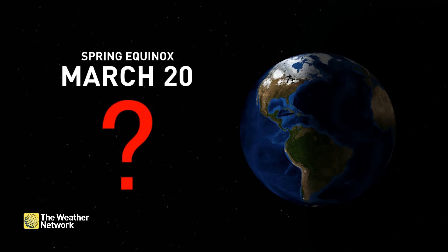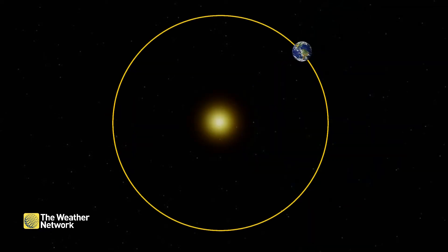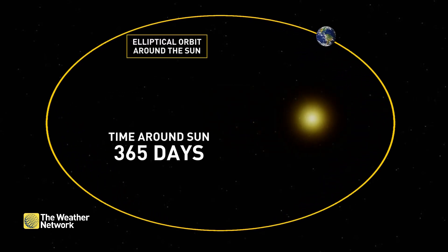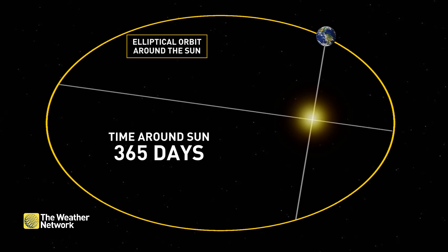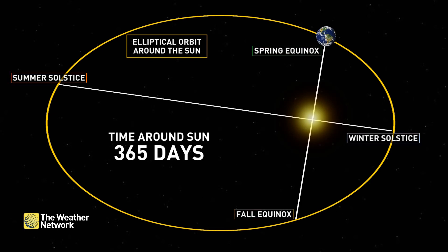So why does it change from year to year? There are actually a couple of reasons. We all know that the Earth takes an elliptical path around the sun that takes about 365 days. But the problem is that it's 365 days plus 5 hours, 48 minutes, and 46 seconds to do the full trip. So if the trip was a perfect 365 days, the equinox would, for the most part, occur on the same day each year.